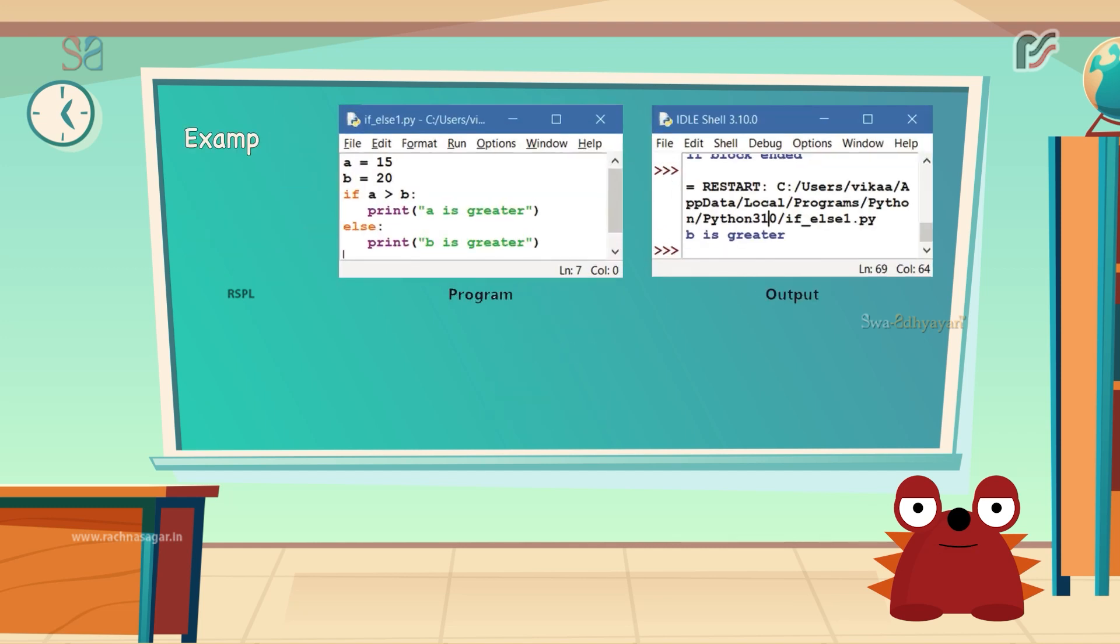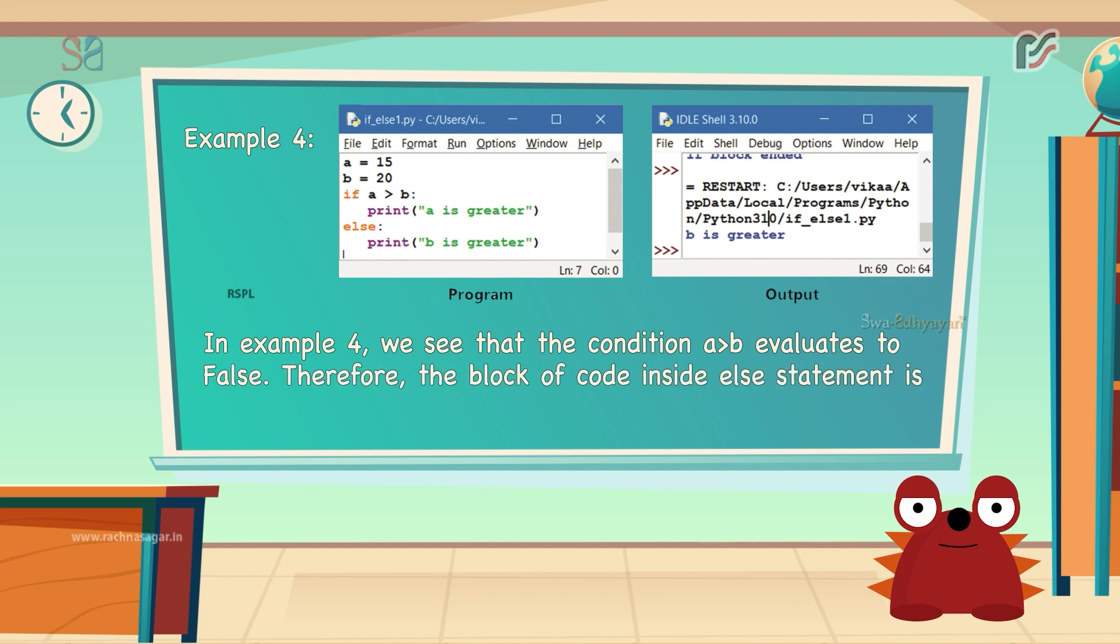Let us look at an example now. Here, we see that the condition a is greater than b evaluates to false. Therefore, the block code inside the else statement is executed.